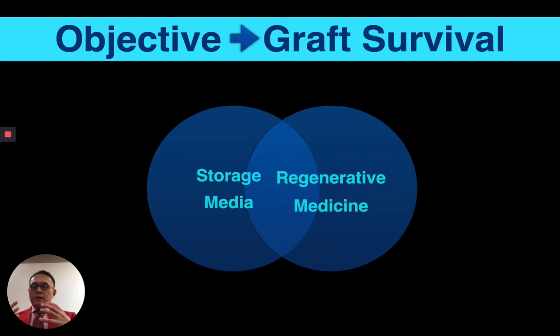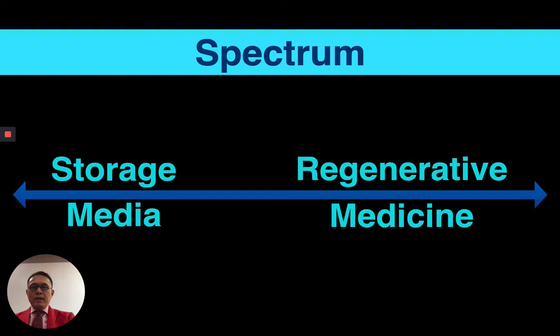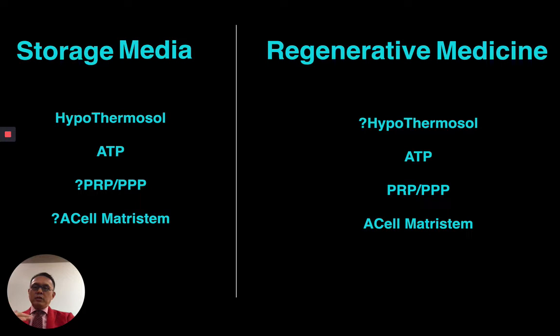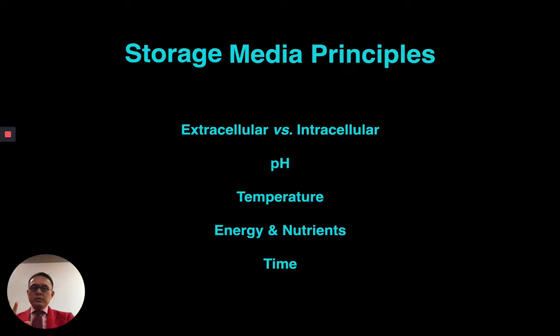I'm very passionate about regenerative medicine, which talks about fertilizers and how you can get hairs to grow better. There's a Venn diagram where they overlap — a spectrum where some parts overlap with regenerative medicine, two sides of the same coin. We'll talk about things like ACell, hypothermosol, ATP, and PRP, which cross over between storage media and regenerative medicine.